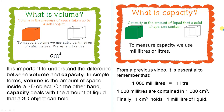What is volume? Volume is the measure of space taken up by a solid object. To measure volume we use cubic centimetres or cubic metres. We write it like this — the letters cm to the power of 3 — that means cubic centimetres.